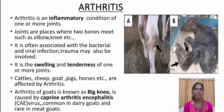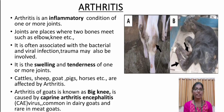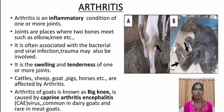Arthritis is an inflammatory condition of one or more joints. Inflammation is nothing but swelling and reddening of any affected body part. Joints are places where two bones meet, such as elbows, knees, etc. Sometimes arthritis is also associated with bacterial and viral infection. Trauma, which is physical injury, may also be involved. It is the swelling and tenderness of one or more joint.